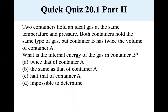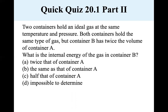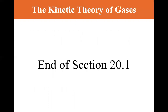Second question: same setup — two containers at the same temperature and pressure, container B has twice the volume. What is the internal energy of the gas in container B? It's twice that of container A. Since the temperature and pressure are the same but the volume is twice as large, container B has twice as many molecules N. The total internal energy scales with N, so it's twice that of container A. That's the end of section 20.1; next is section 20.2, the molar specific heat of an ideal gas.